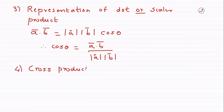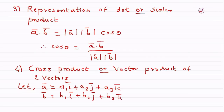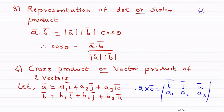The cross product or vector product of two vectors is the most important part. Let a-bar = a1·i + a2·j + a3·k and b-bar = b1·i + b2·j + b3·k. Then a-bar × b-bar is given by the determinant with first row i, j, k; second row a1, a2, a3; and third row b1, b2, b3.